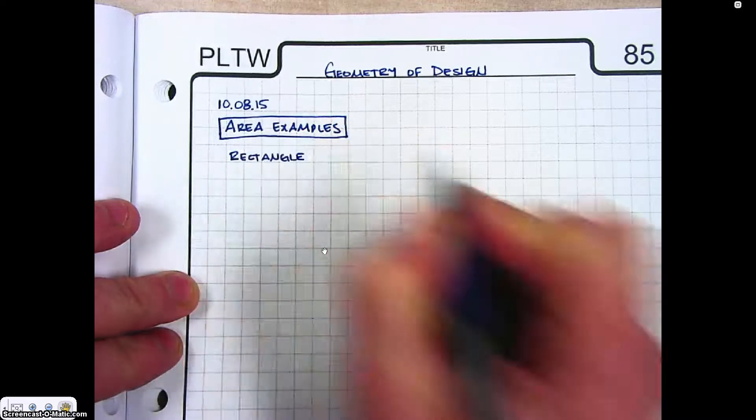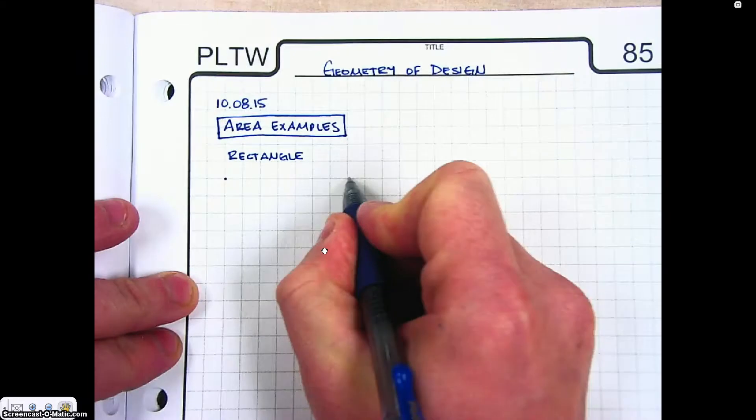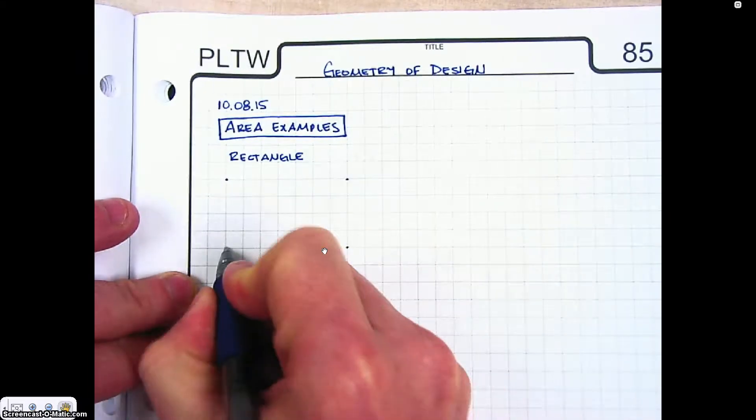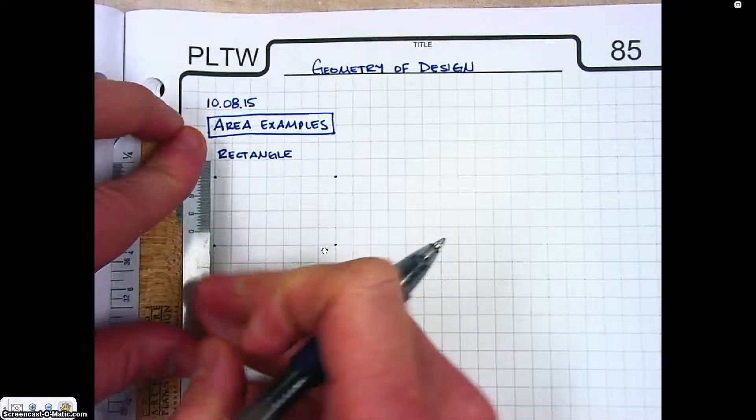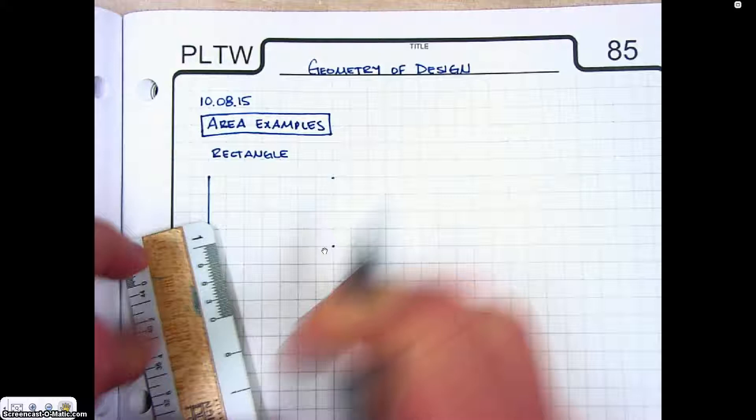One thing that we have to remember about a shape is it has to be enclosed. And so I'm just going to put some points on here and I'm going to draw a rectangle. And so what I mean by that is the starting point and the stopping point have to be the same.